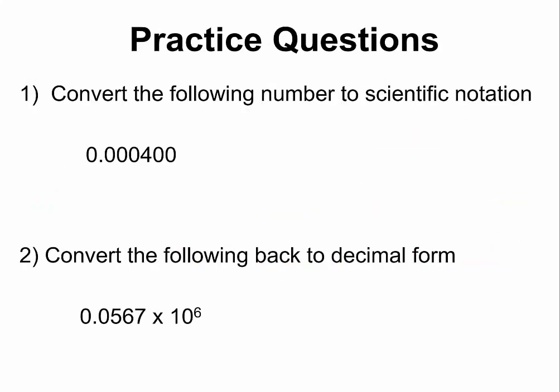Now, pause the video and try these questions. If you get 4.00 times 10 to negative 4 for the first question, you are correct. For the second question, you should get 56700.